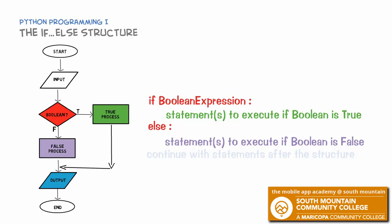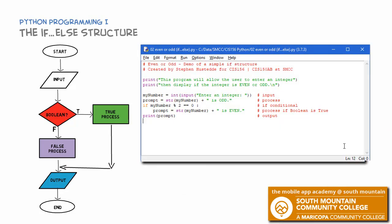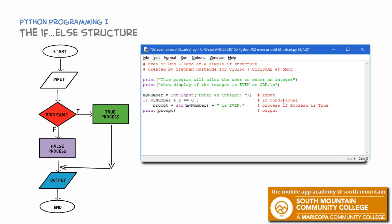Here's the program we wrote earlier to figure out if the number the user enters is even or odd. We had a default prompt variable where we set the number to odd, and then we used a simple if structure that only had a true fork. We're going to change this and use an if-else instead. In doing that, I no longer need that default line, so I'm just going to delete it.